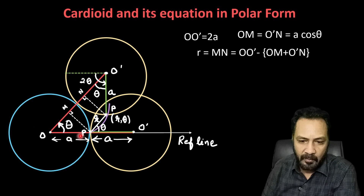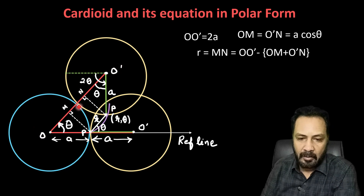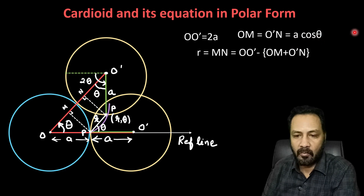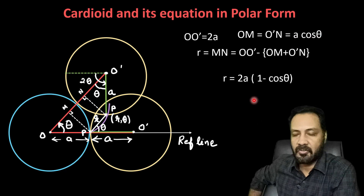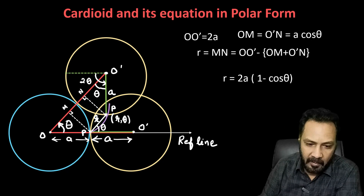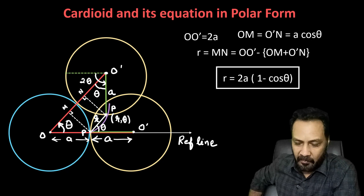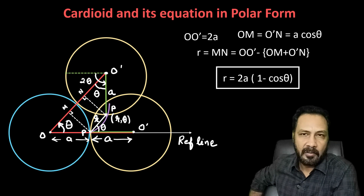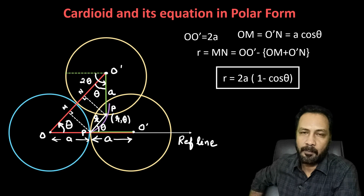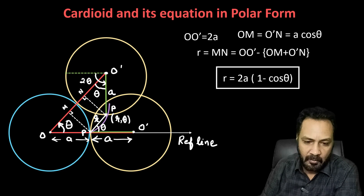So we get the polar form: r = MN = O–O' minus 2 × OM = 2a − 2a × cos(theta). Therefore r = 2a(1 − cos θ). That is the polar form of the cardioid. We have derived the polar form from the fundamental definition, and now we will use this polar form to plot the cardioid.